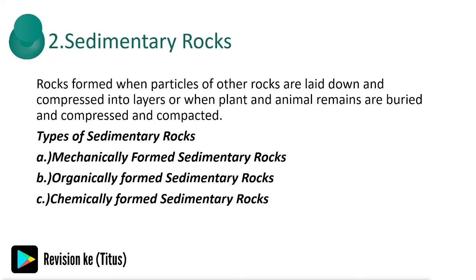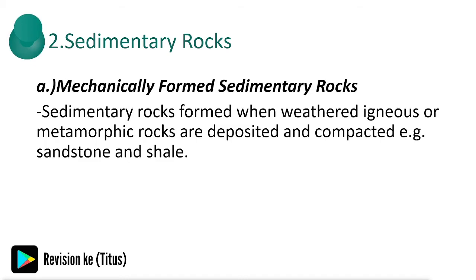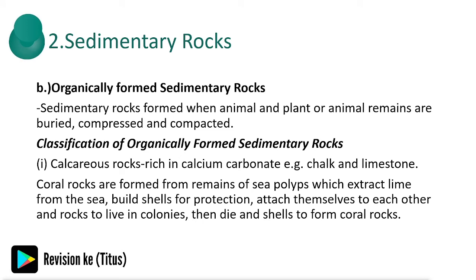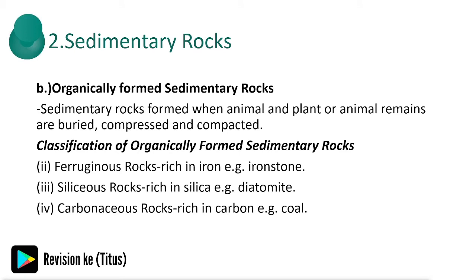Sedimentary rocks are formed when particles of other rocks are laid down and compressed into layers, or when plant and animal remains are buried, compressed, and compacted. There are three types: mechanically formed, organically formed, and chemically formed. Mechanically formed sedimentary rocks are formed when weathered igneous or metamorphic rocks are deposited and compacted. Organically formed sedimentary rocks are formed when animal and plant remains are buried, compressed, and compacted — examples include chalk and limestone.